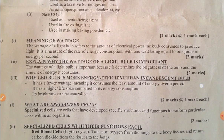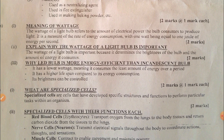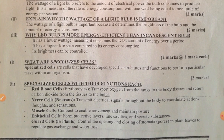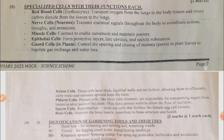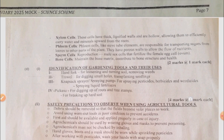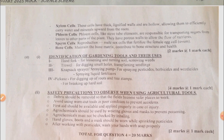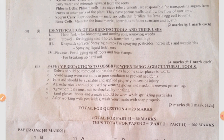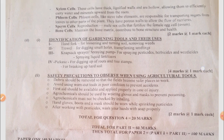Wattage has to do with electrical power in a bulb — why it is important, and why LED is more energy efficient than incandescent bulbs. Question 5c has to do with specialized cells — cells that play a specific function within an organism — and examples in living things. Question 5d covers gardening tools and the precautions to observe when using agricultural tools.